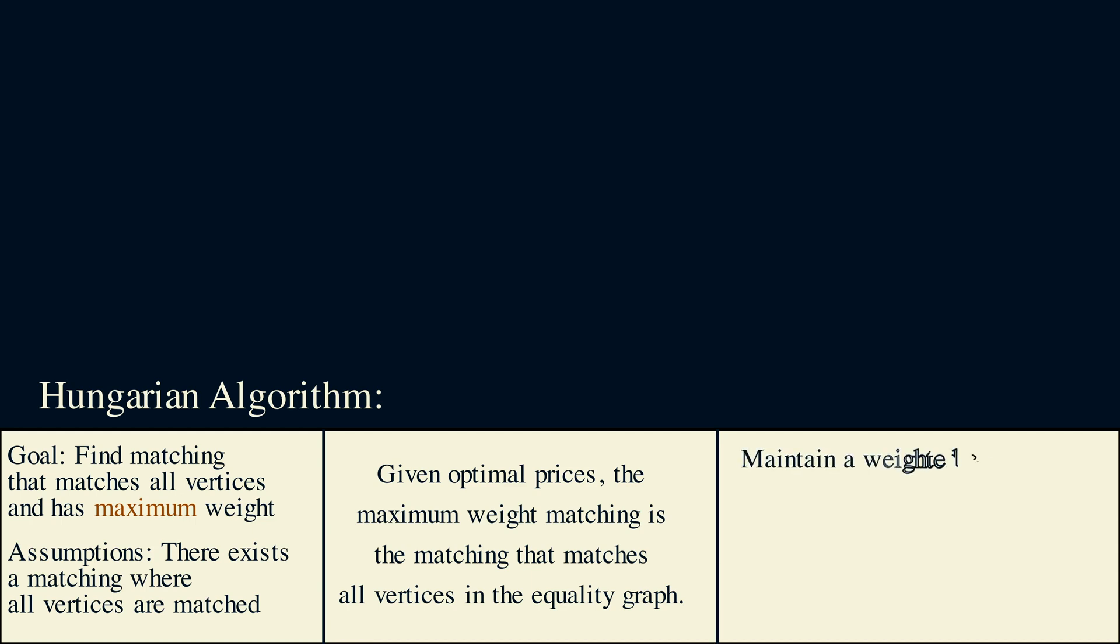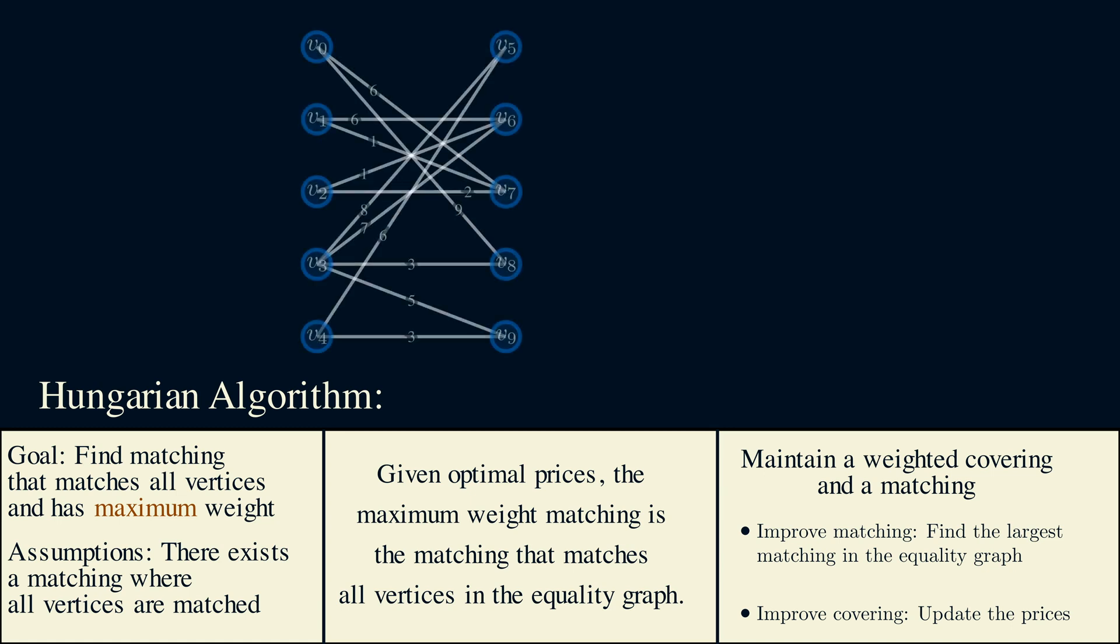The main result we saw so far is that given optimal prices, the maximum weight matching lies in the equality graph. This motivates the following high-level idea. First, we maintain a weighted covering and a matching in all iterations. Then, given the prices, we can form the equality graph and then find the largest matching inside this graph. If the largest matching doesn't match all the vertices, then we need to adjust the node prices. The idea is to alternate between updating the prices and updating the matching until we converge to the optimal solution. Now, this might all seem pretty confusing, so I'll walk through an example.